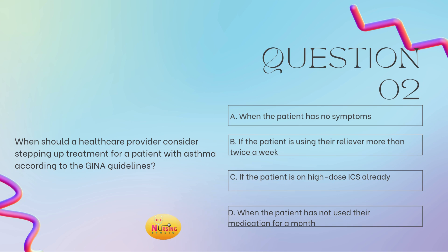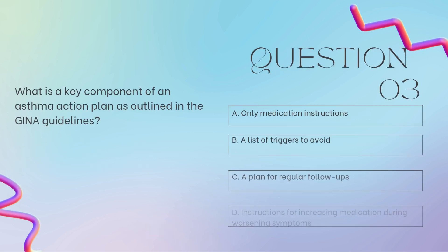When should a healthcare provider consider stepping up treatment for a patient with asthma? The best answer is B — if the patient is using their reliever more than twice a week. So if they're using that reliever more than two times a week, you need to consider stepping up the asthma stepwise approach. And I always like to give the reminder: although asthma is a chronic condition, you can step down the stepwise approach too.